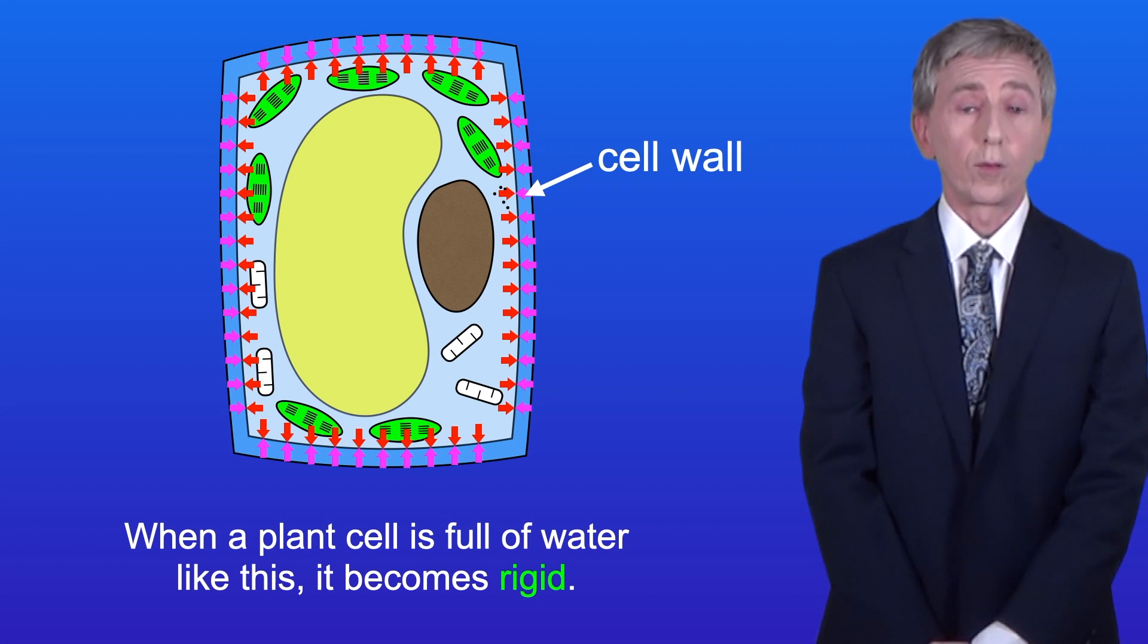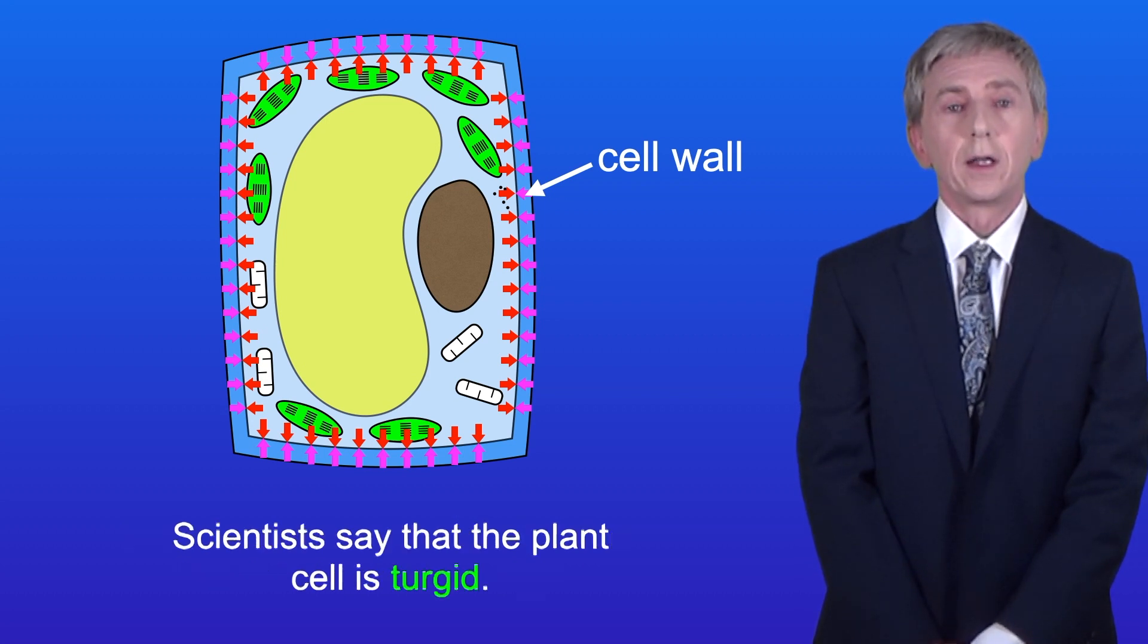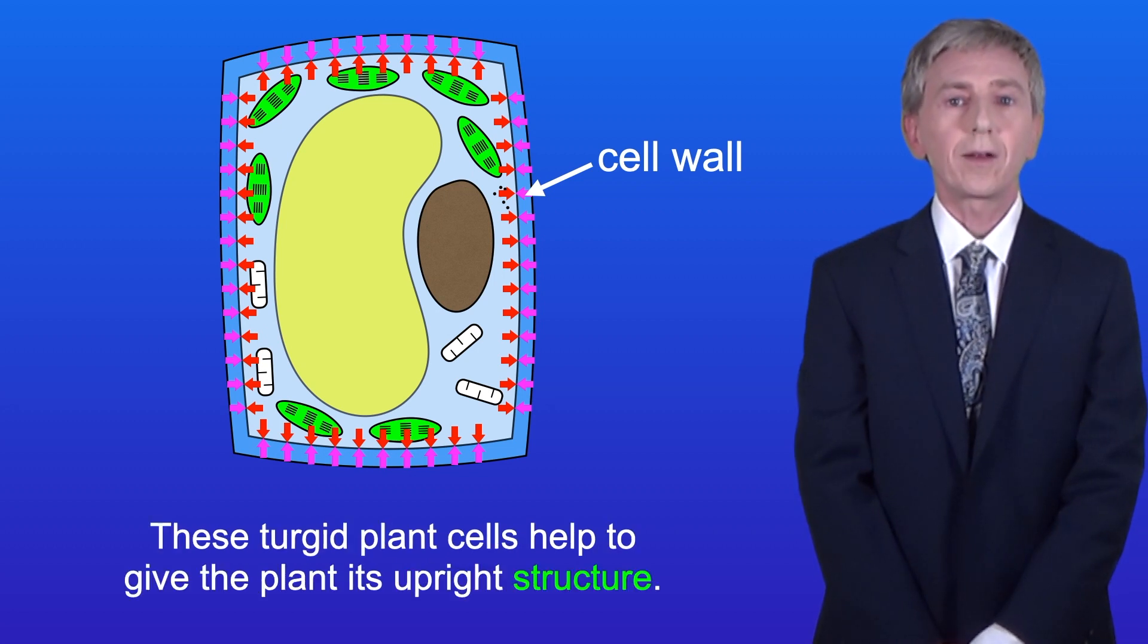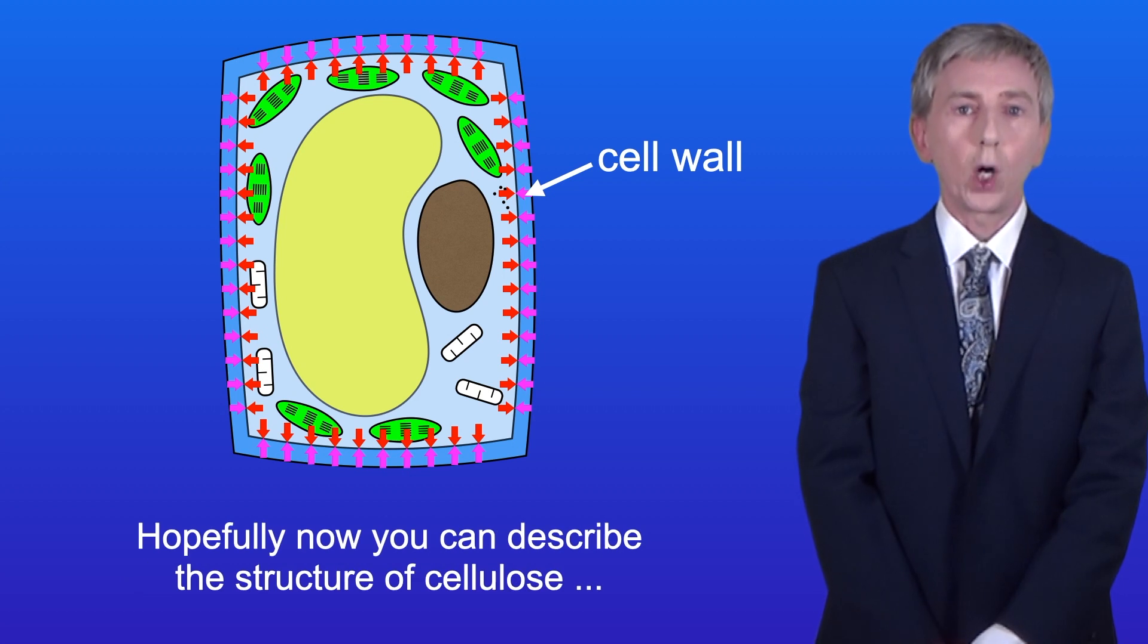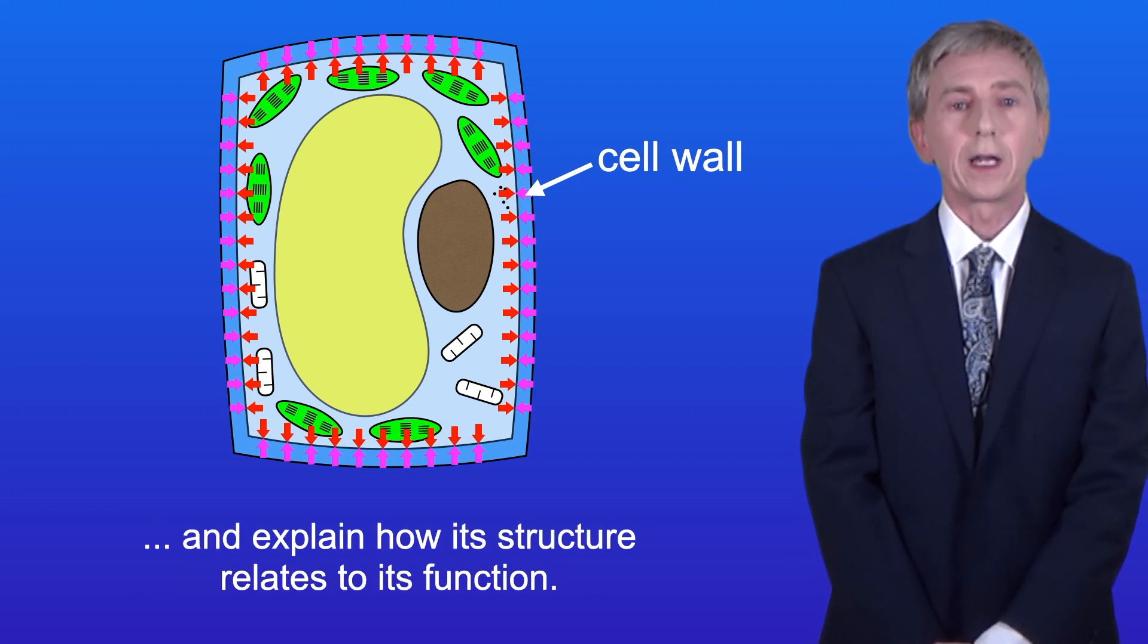When a plant cell is full of water like this, it becomes rigid. Scientists say that the plant cell is turgid, and these turgid plant cells help to give the plant its upright structure. So hopefully now you can describe the structure of cellulose and explain how its structure relates to its function.